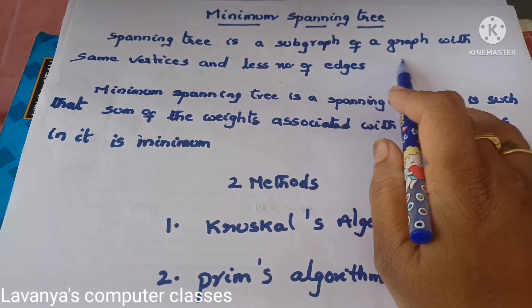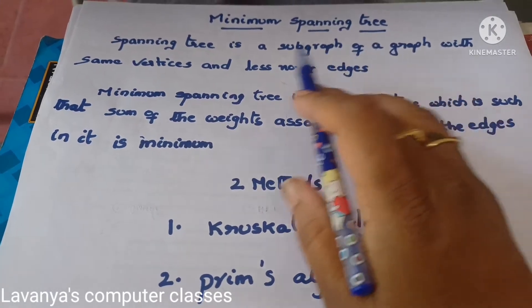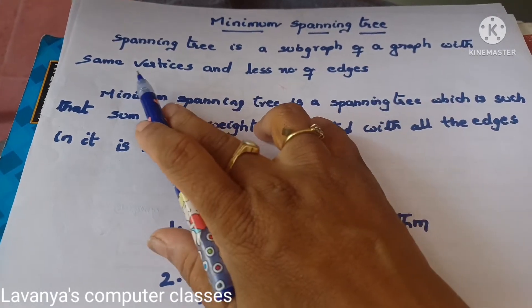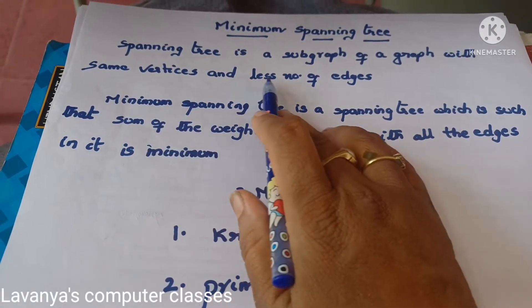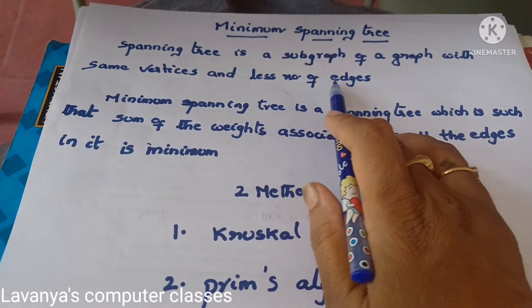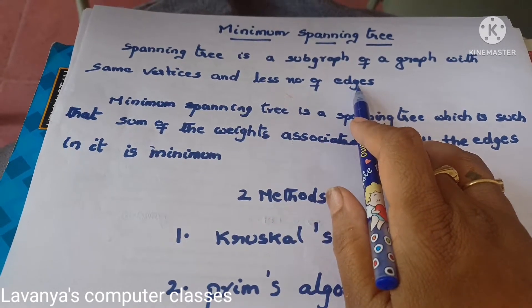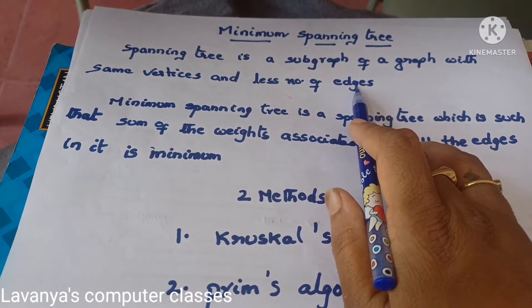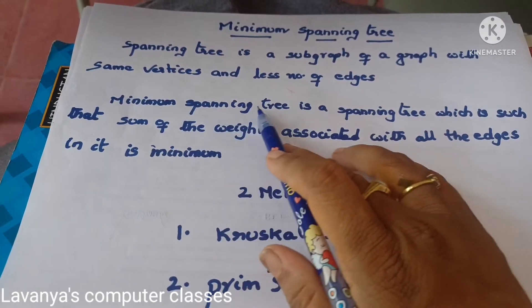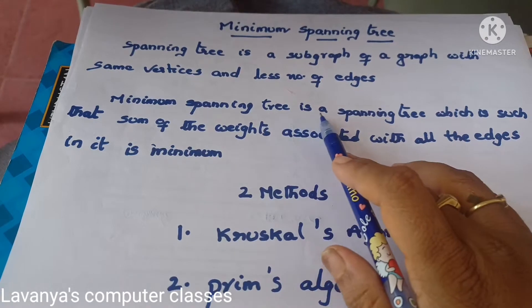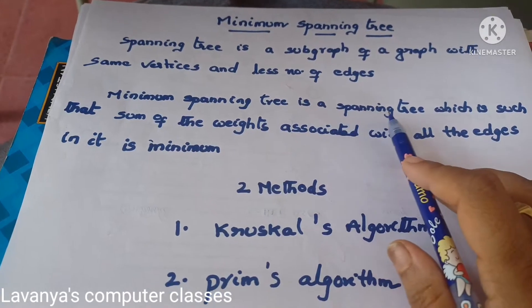What is a spanning tree? A spanning tree is a subgraph of a graph with the same vertices but a lesser number of edges. In a previous video, I already covered spanning trees.